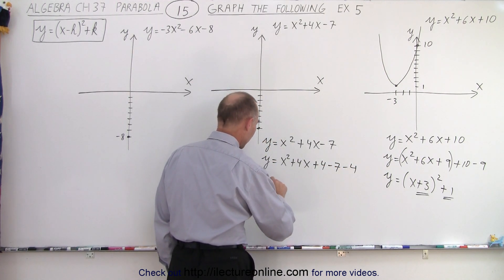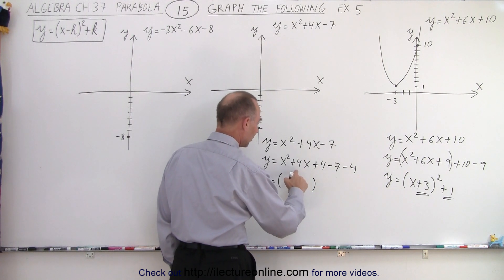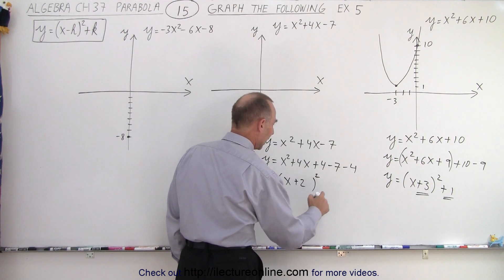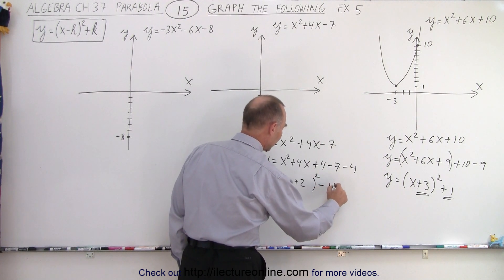Then if I combine all that we get y equals, I can write this as the binomial squared, x plus 2 squared, and minus 7 minus 4 is minus 11.